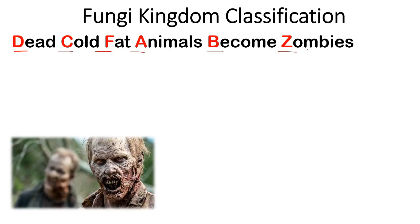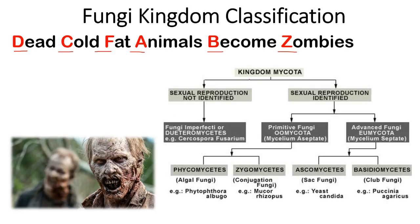This is the whole kingdom Mycota, which we can divide into several different parts based on different properties. We start with D, which stands for Deuteromycetes. Deuteromycetes is also known as imperfect fungi or Fungi Imperfecti. We separate it out at the very beginning because no sexual reproduction has been identified in Deuteromycetes.